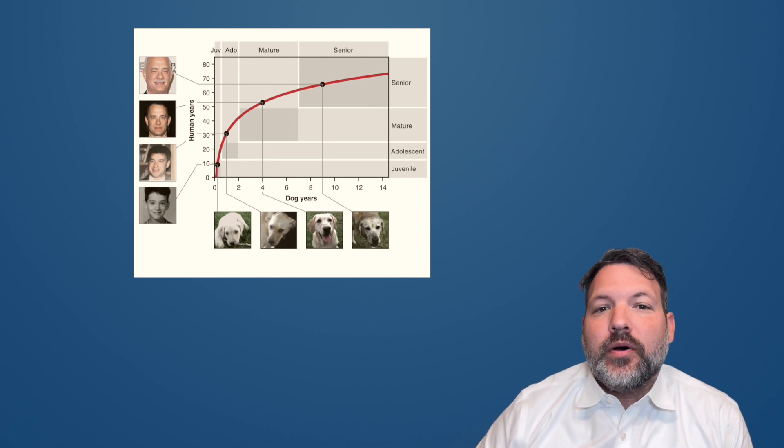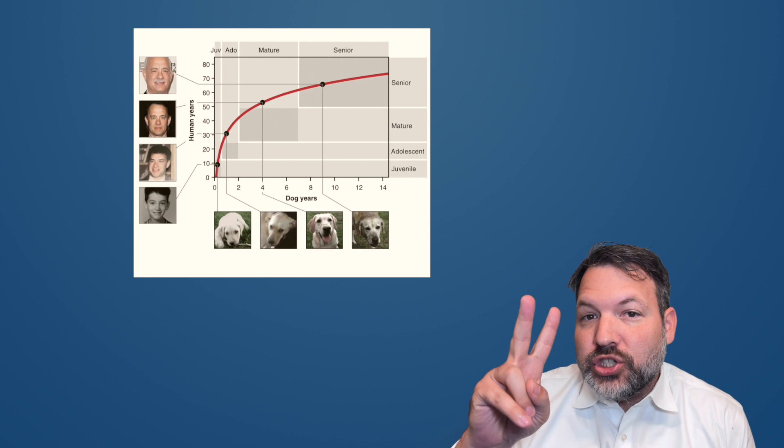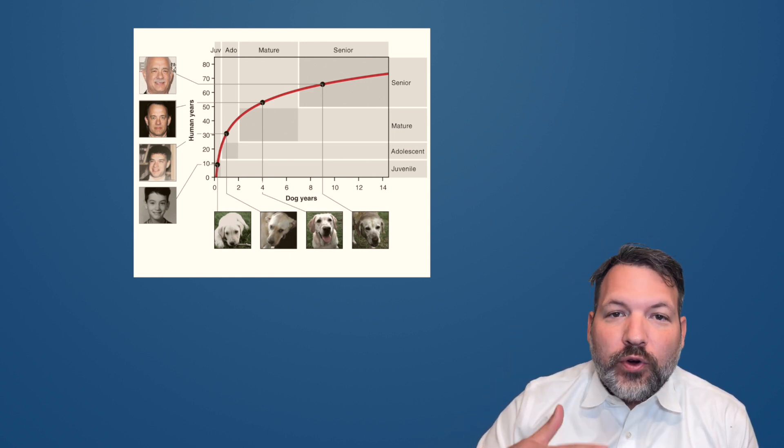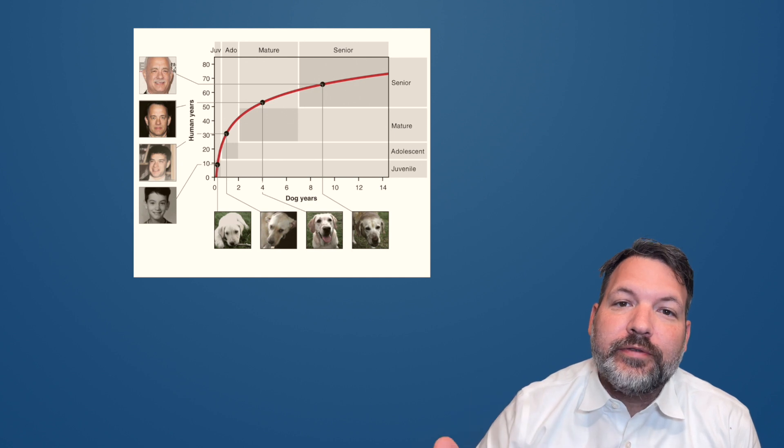I love this Cleo Abram video on a 2020 paper that looked at a different way to correlate dog years and human years. Of course, the classic rule is what all my math followers recognize as a linear function.